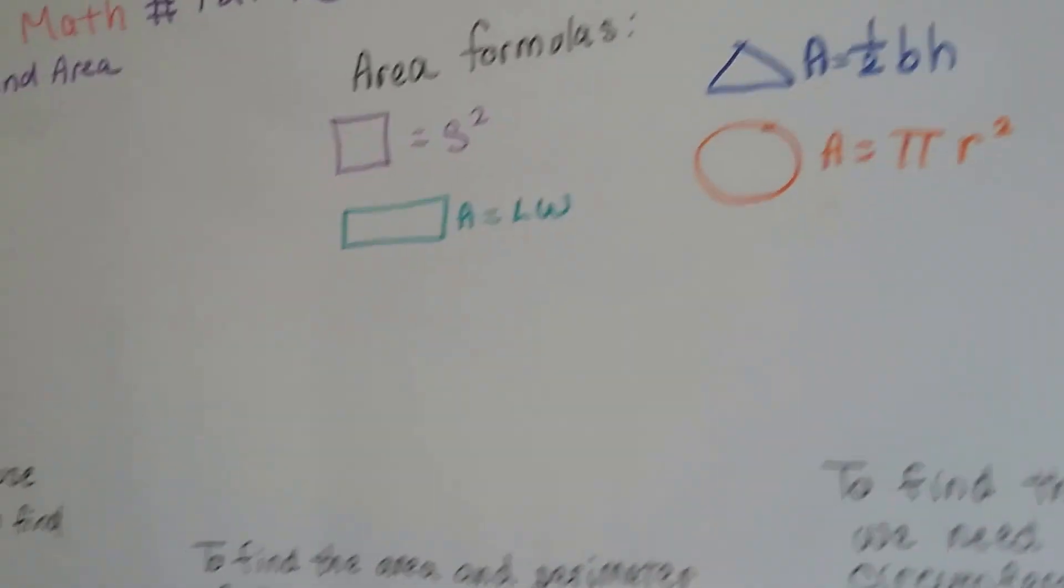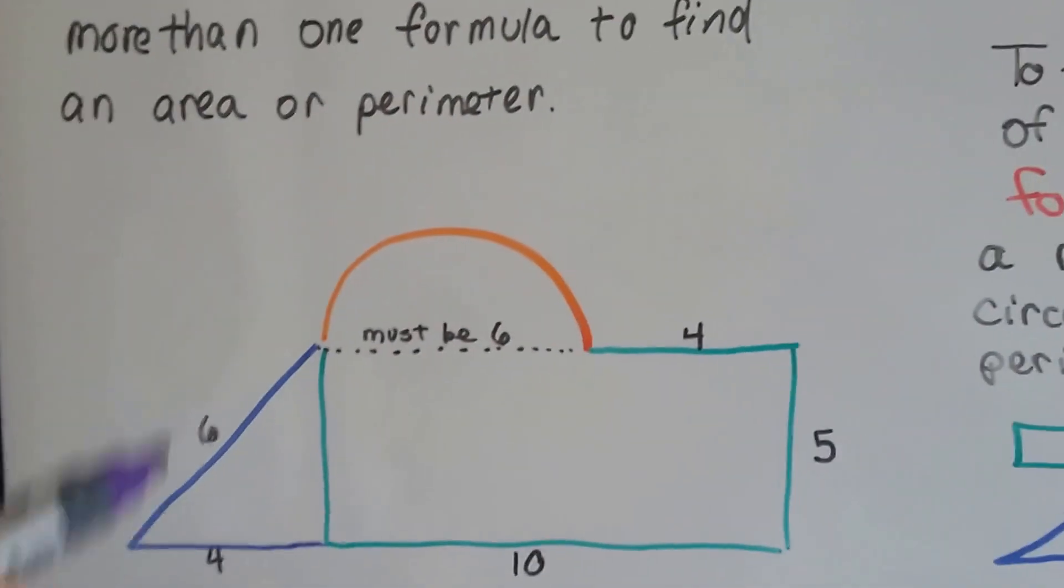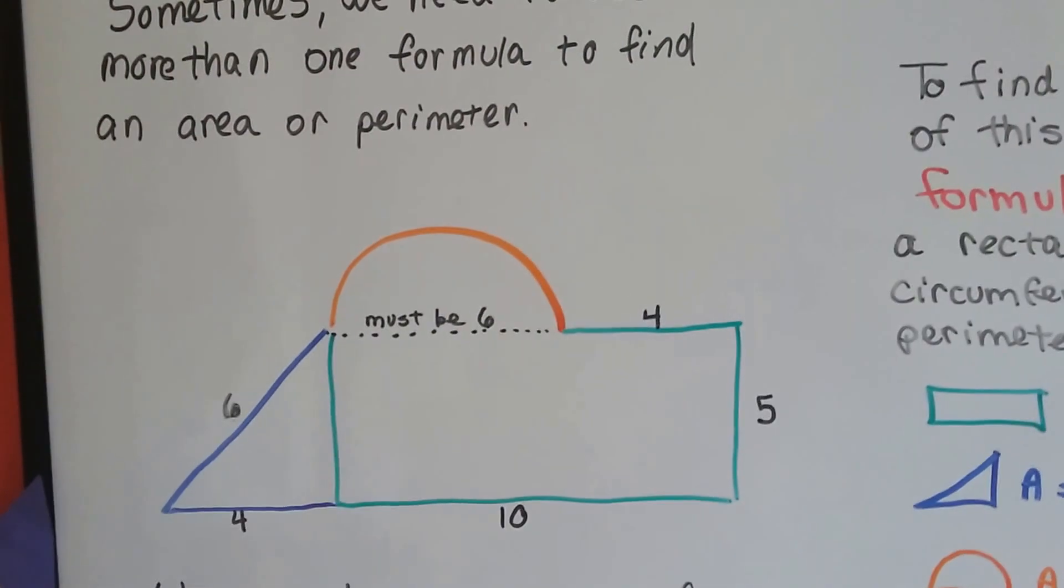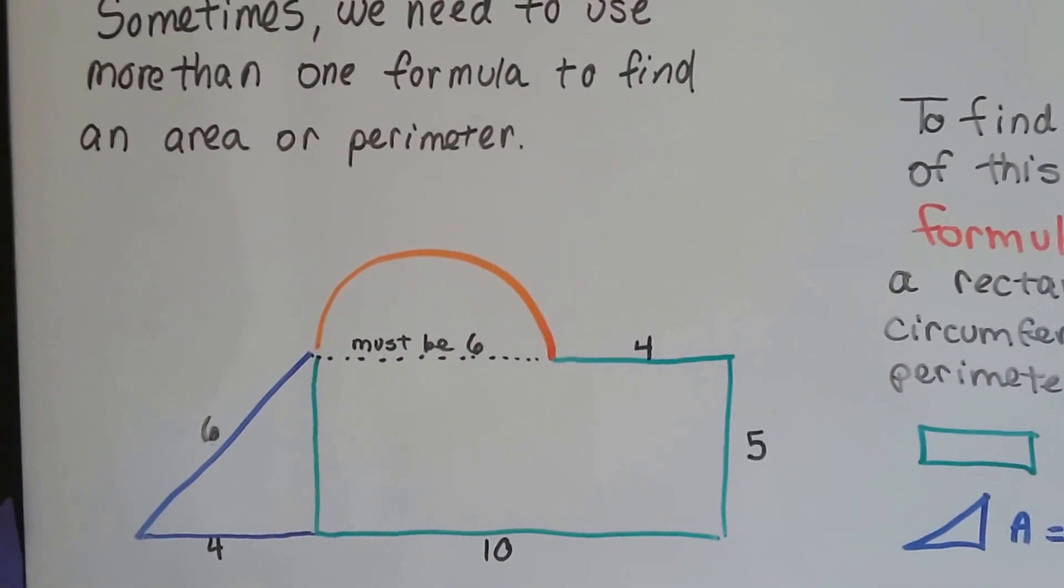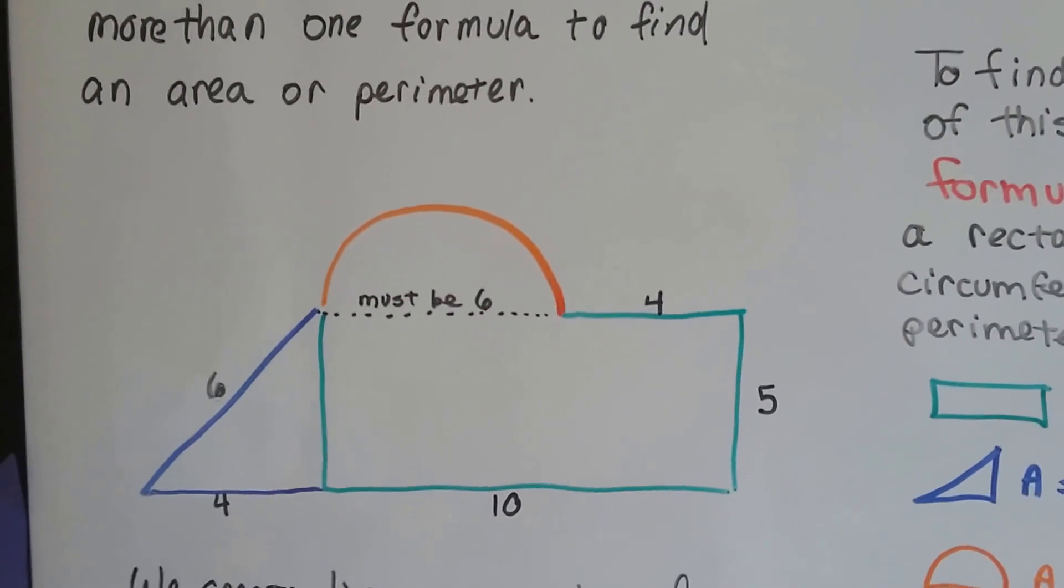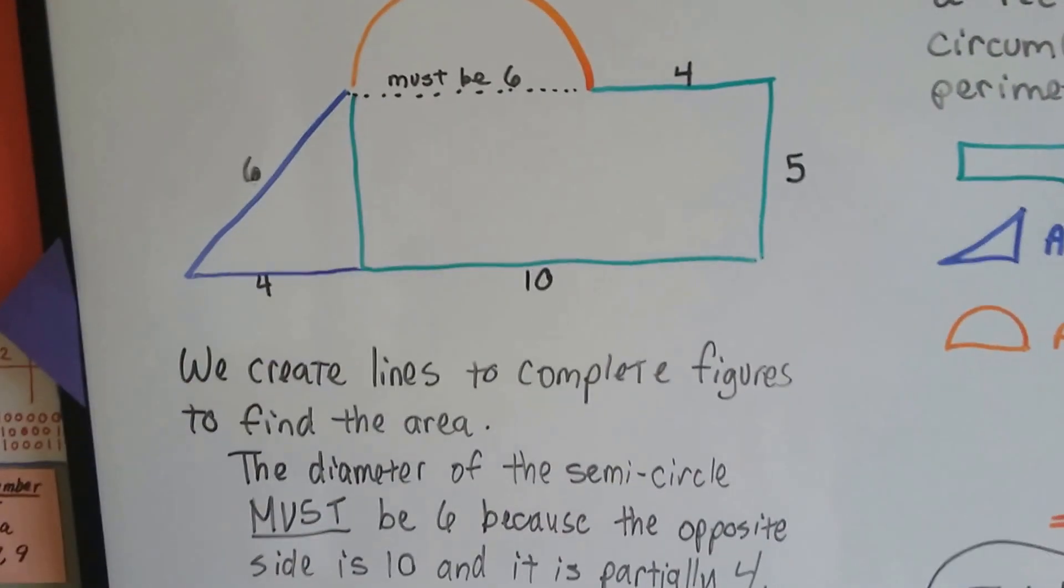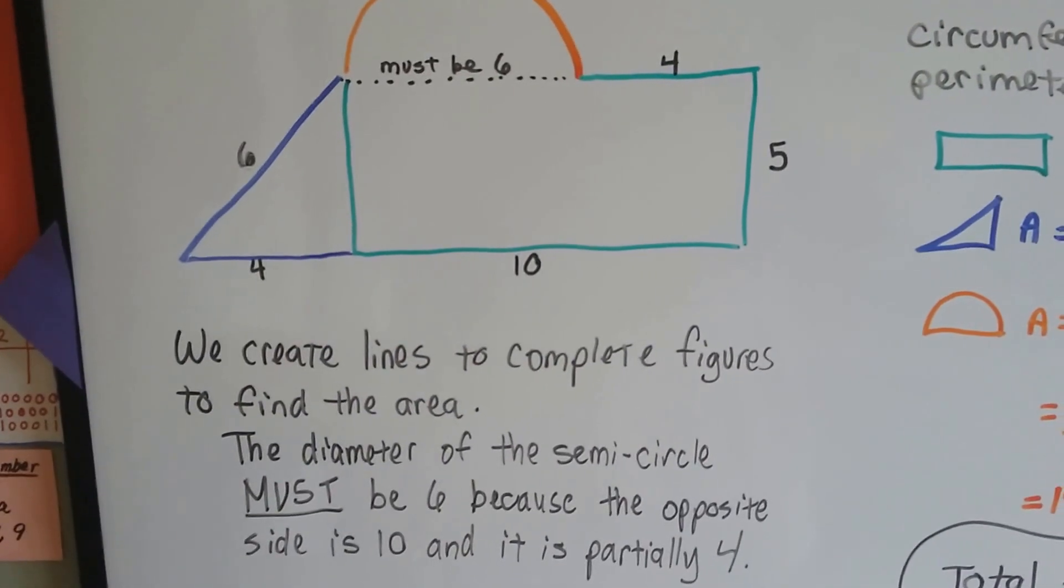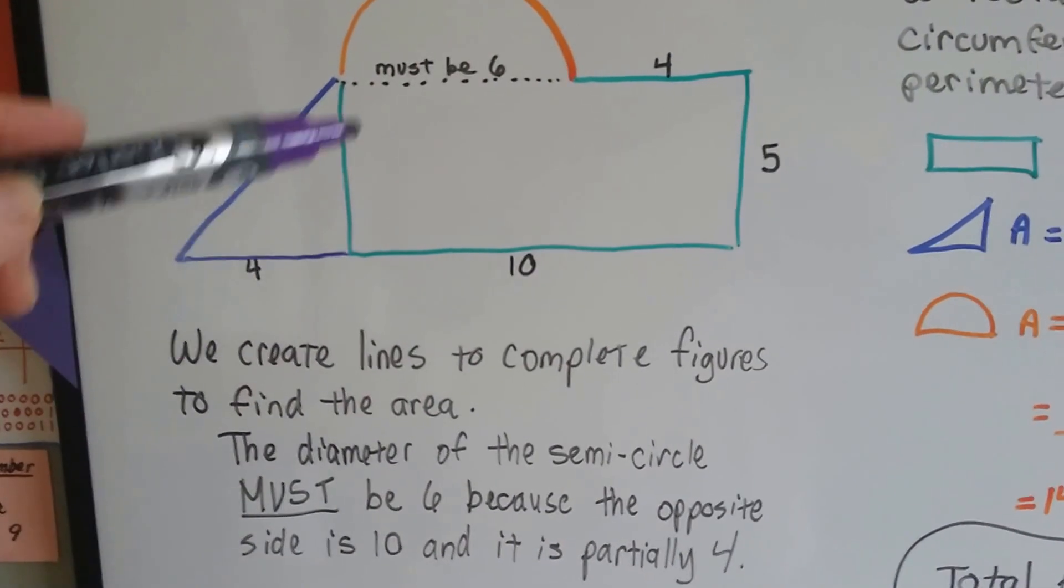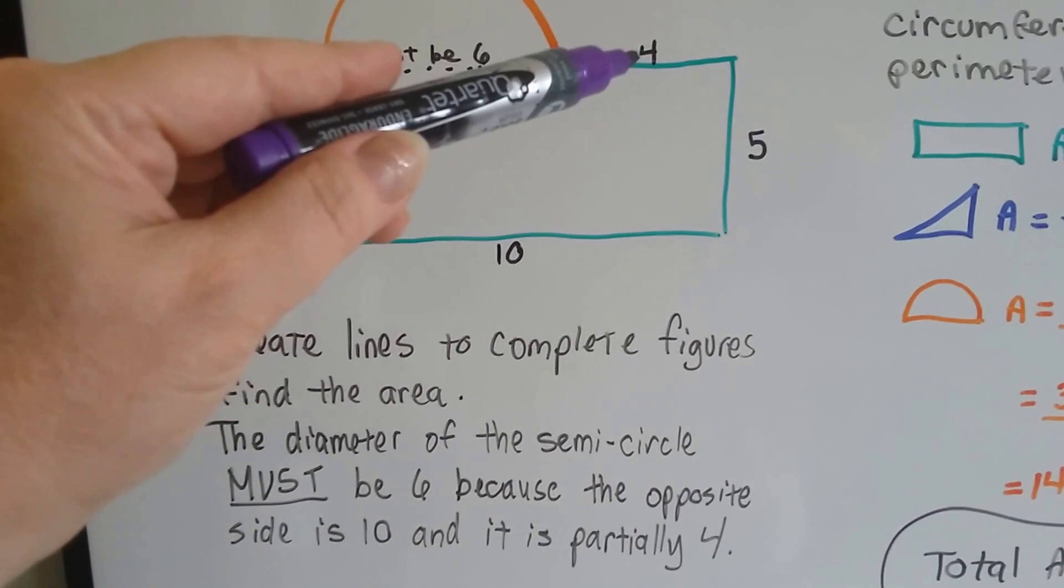And we've been working with figures that have more than one figure in them. They're composites. There's more than one. It's composed of several shapes. So sometimes we need to use more than one formula to find an area or perimeter. We create lines, like my dotted line here, to help us complete the figures to find the area.